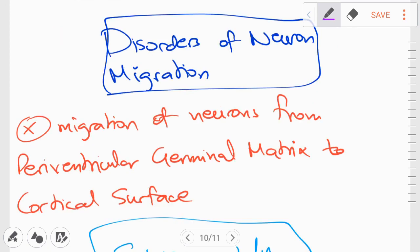So the last set of disorders we're going to discuss now are called the disorders of neuron migration. In these set of disorders, there is disruption of neuronal migration from the periventricular germinal matrix to the cortical surface.